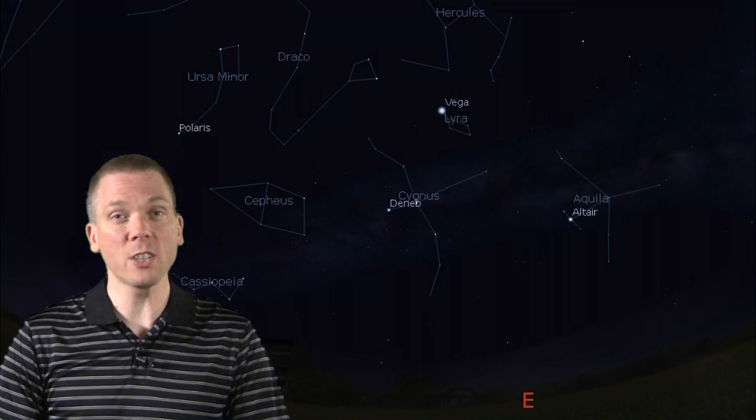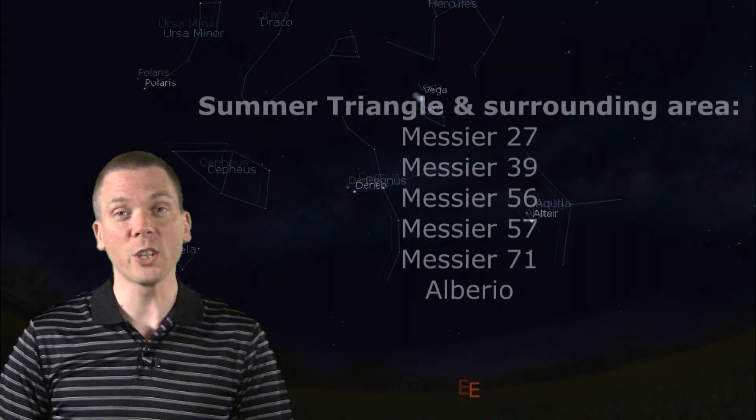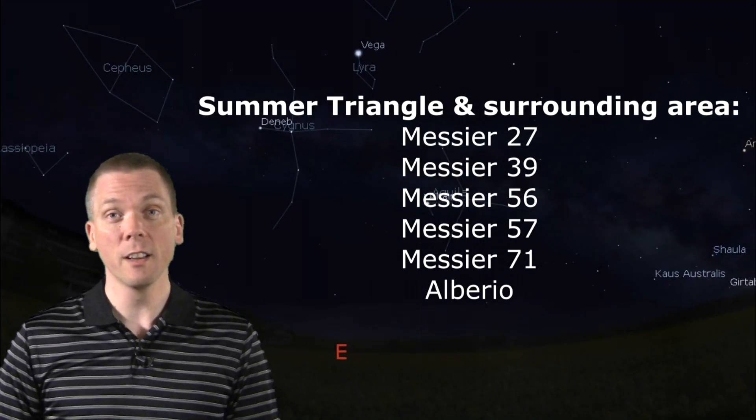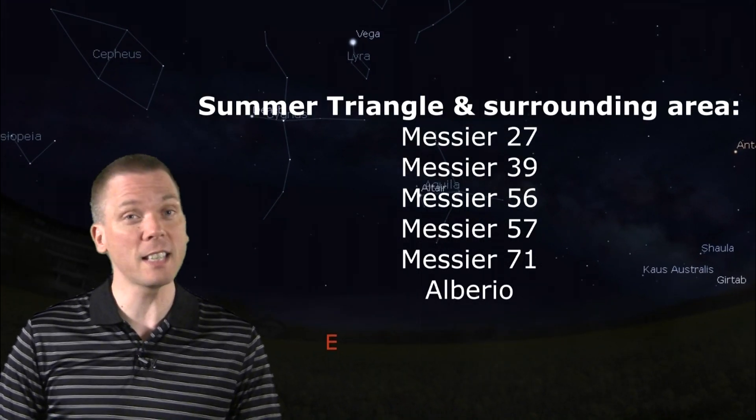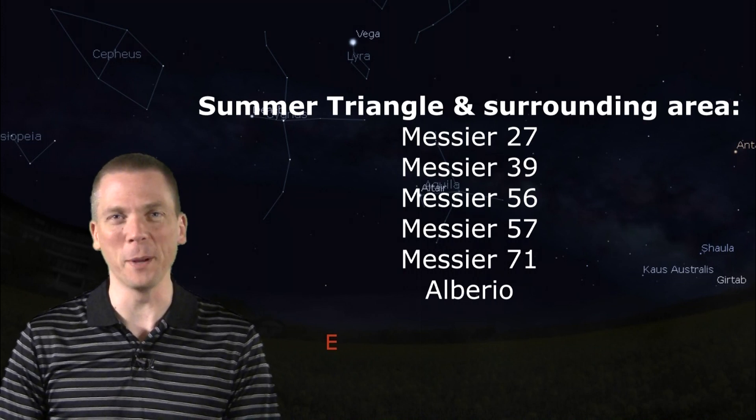Some dimmer constellations surround this area, and contain a number of superb summer observing sites, such as Messier 27, 39, 56, 57, and 71, among others, such as the double star Albireo.